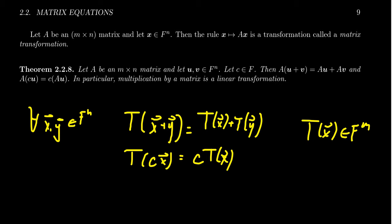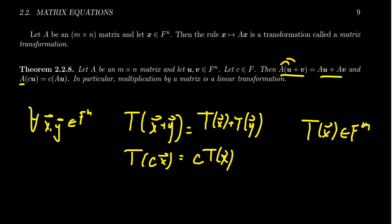A linear transformation preserves vector addition and scalar multiplication — will matrix multiplication do that? If we take two vectors u and v and a scalar c, notice that A times (u + v) equals Au + Av. By the distributive property of matrix multiplication we can distribute across the vector sum, so it preserves vector sums. Likewise, A times cu equals c times Au, so matrix multiplication also preserves scalar multiples.